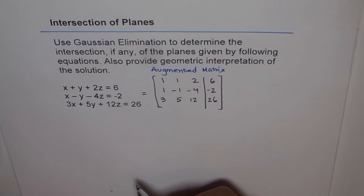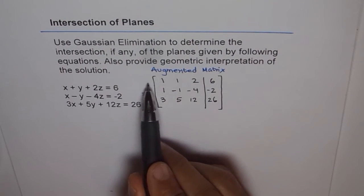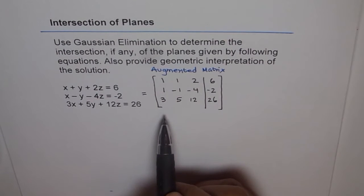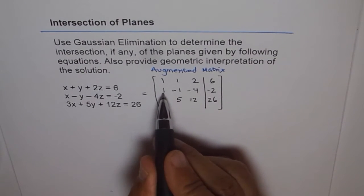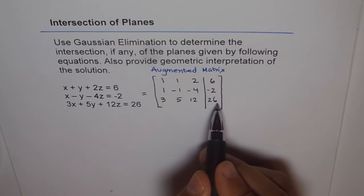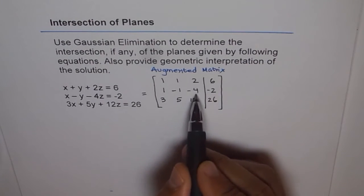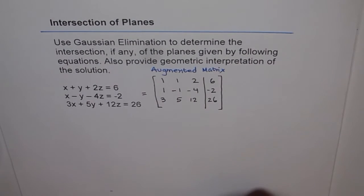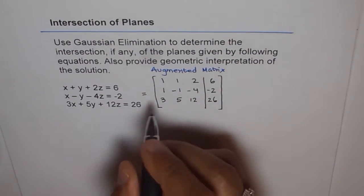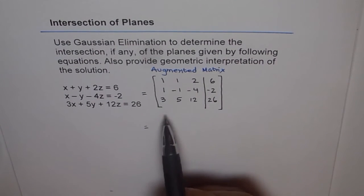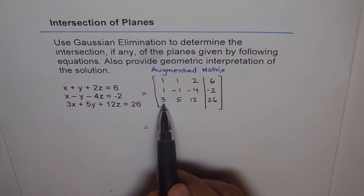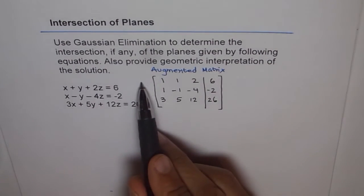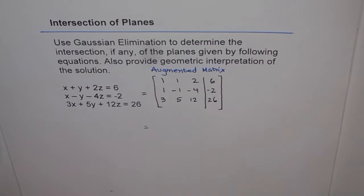We have row 1, row 2, and row 3. We can multiply these rows by any constant number and then add the rows. The idea is to get zeros in the lower-left corners. If we get zeros there, then we know the value of z, and from there we can solve for y and x. To get a zero in the third row first column, we can multiply the first row by minus 3 and then add it to row 3.